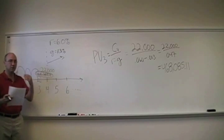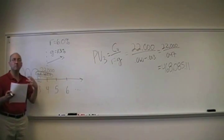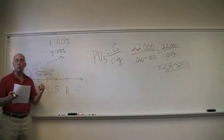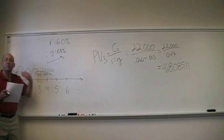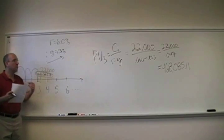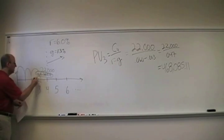And again, remember, the first cash flow takes place four years from today. However, in order to value it as a growing perpetuity, we get the value as of one year before, which is three years from today. Now, if we know that something's going to be worth roughly $468,000 three years from now, it's very easy to find the value today.